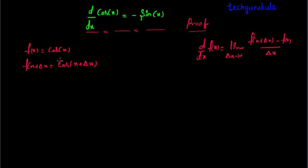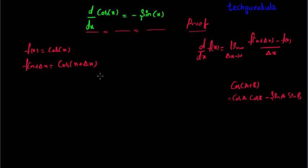This looks like it is in the form of cos of a plus b, which can be written as cos a cos b minus sine a sine b. So cos of x plus del x can be written as cos x cos del x minus sine x sine del x.